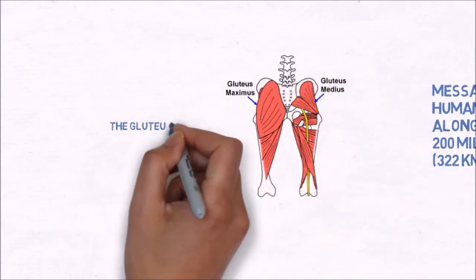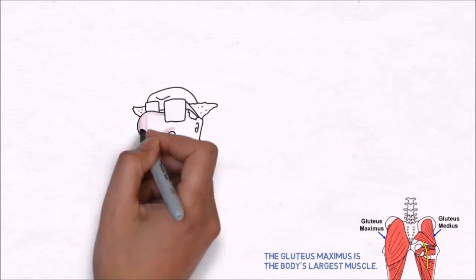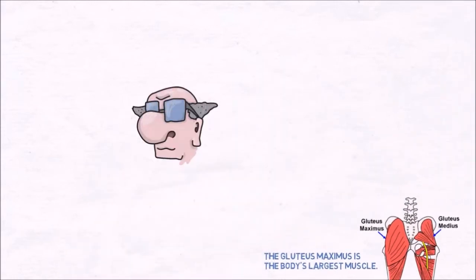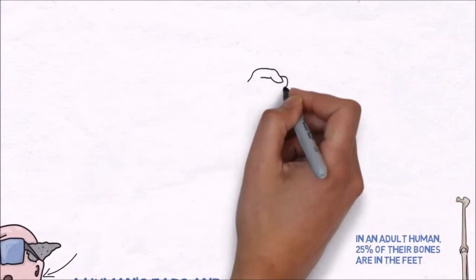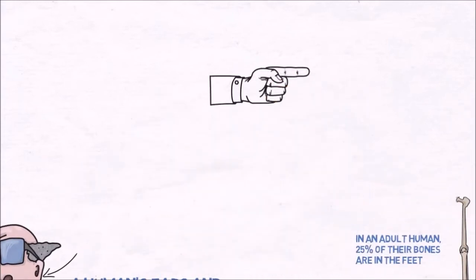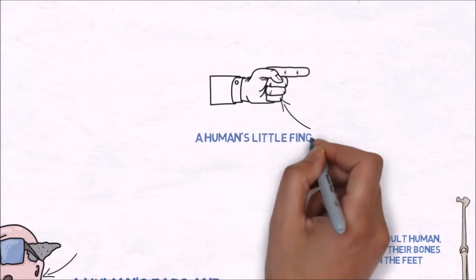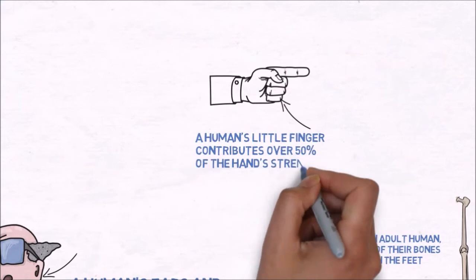The gluteus maximus is the body's largest muscle. A human's ears and nose never stop growing. A human's little finger contributes over 50% of the hand's strength.